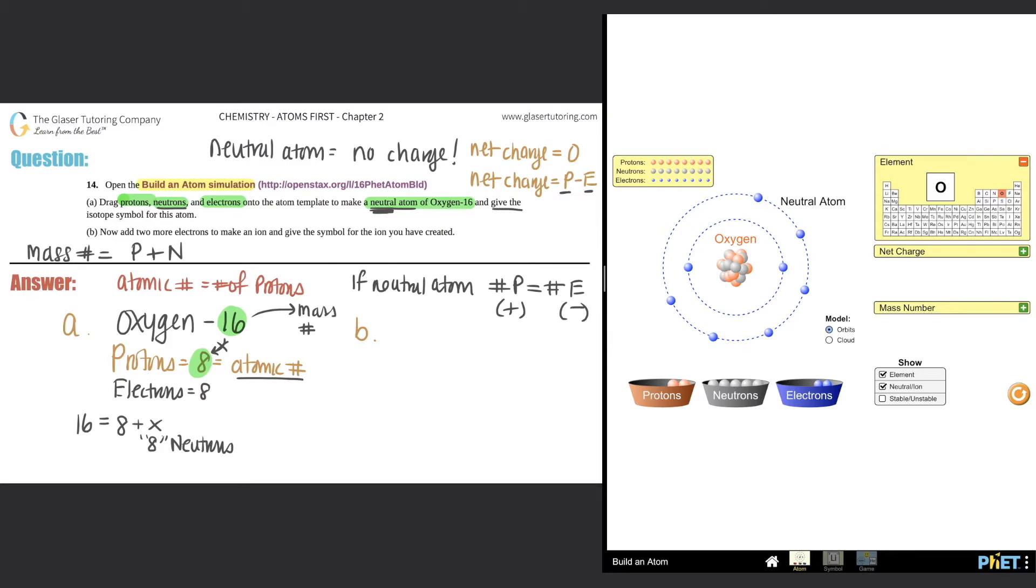Now they just say give the isotope symbol. A symbol has three specific things. If I'm writing anything for a given element, I need to cover the top left—that's the Z number, the A number, and the charge. The Z number is the mass number, the bigger number. The A number is the atomic number, the smaller one. And then the charge is obviously the plus or the minus—it's the net charge. Here, I'm going to write it down. My symbol for oxygen is O. The Z number is the mass number.